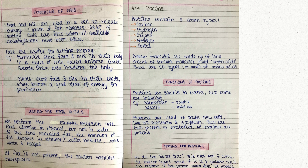Fats are insoluble in water and when fats are liquid at low temperatures, they are called oils. Fats, just like carbohydrates, are used to release energy, but cells use fats when all the available carbohydrates in the body have been used. For example, mammals store fats and oils in a layer of cells called adipose tissue, which also insulates the mammal's body. Plants store fats and oils in their seeds, which becomes a good store of energy for germination.